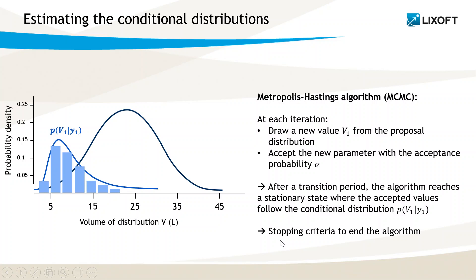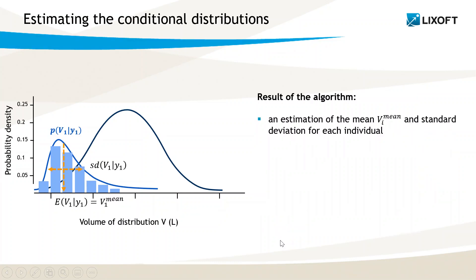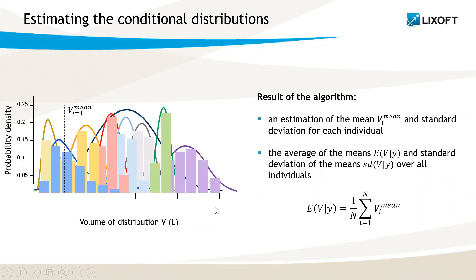The algorithm ends according to a stopping rule implemented in Monolix that decides when convergence is satisfactory. But before explaining the stopping criteria, let's have a further look at the results of the algorithm. The conditional mean and standard deviations are calculated for each individual by averaging over the values drawn at all iterations. They are a way to summarize the distribution, which has no explicit formula. In particular, the mean, which we can call V-mean, is outputted by Monolix in the interface and the result folder. Since the procedure is done on all individuals, Monolix also calculates the average and standard deviations of the conditional means over all individuals. The stopping criteria is based on these estimates.